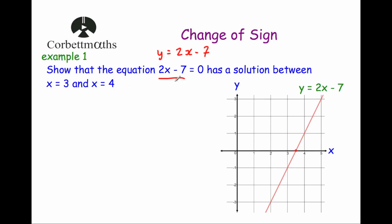We're going to show that this equation has a solution between 3 and 4. Looking at the graph of 2x minus 7, it crosses the x-axis at 3.5. Points to the left of the solution have negative heights, and on the right-hand side they have positive heights. So substituting in x=3 should give a negative value, substituting in x=4 should give a positive value, meaning the function equals 0 somewhere in between.